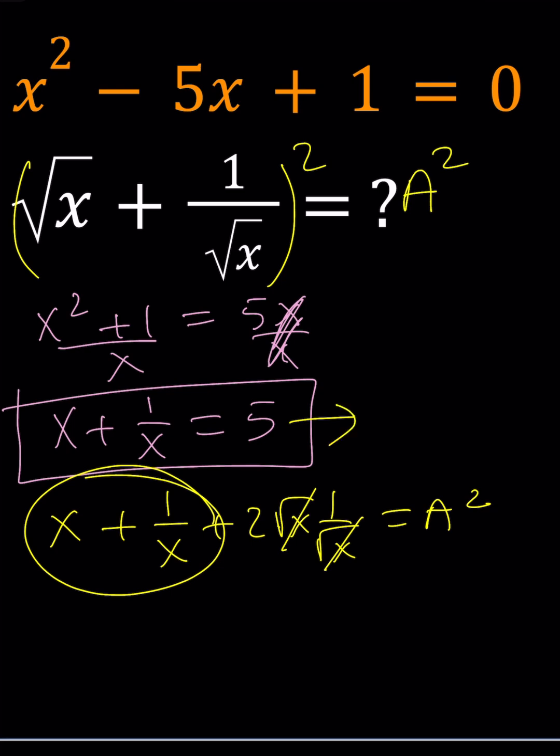So a squared is equal to 7, and from here we know that a is positive. Then a becomes square root of 7, and that will be the only answer.